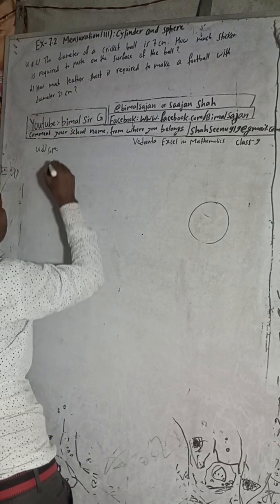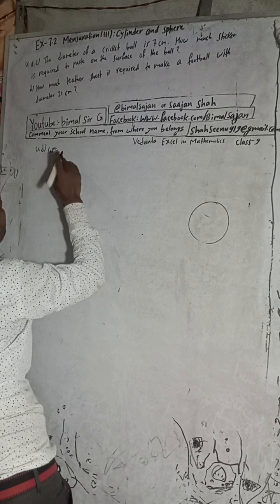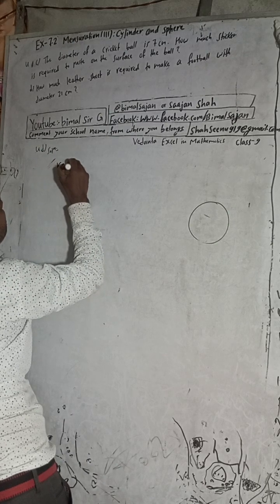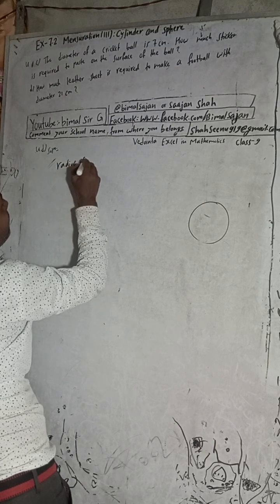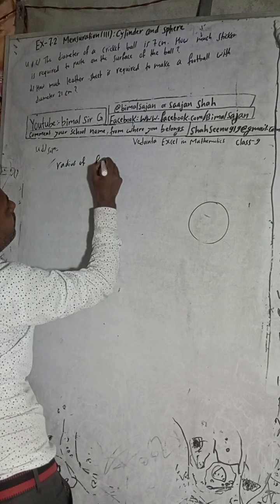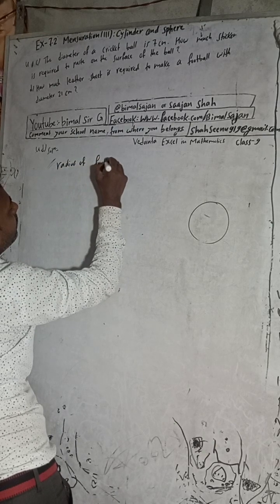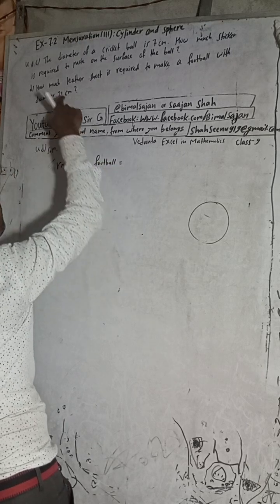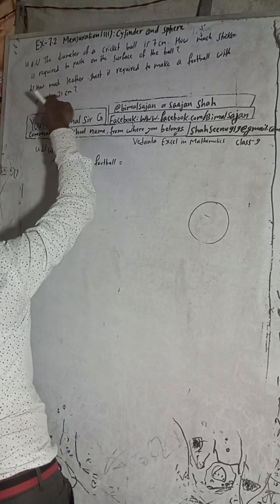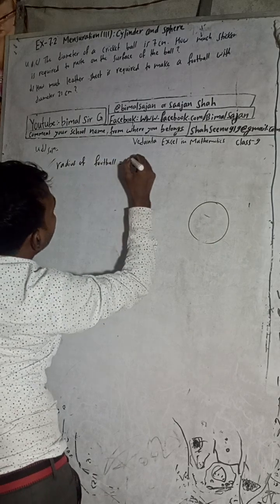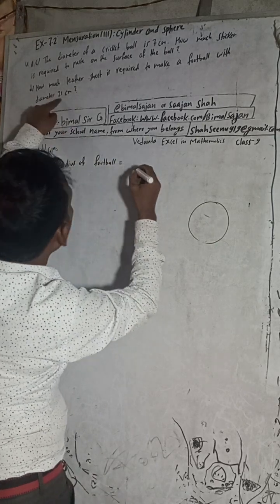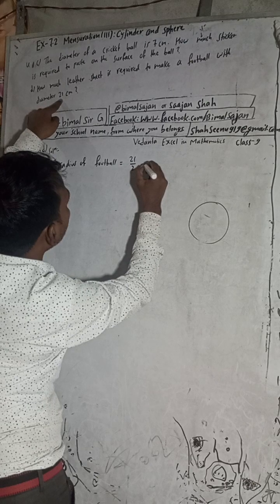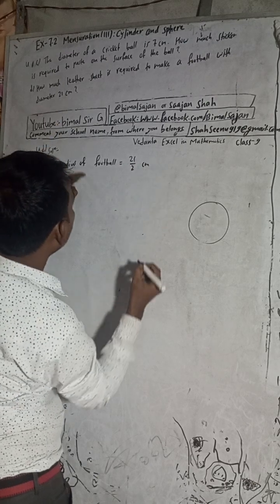So diameter is given. The diameter of the football is 21 cm. The radius of the football will be half of the diameter, that means 21 by 2. This is our radius.